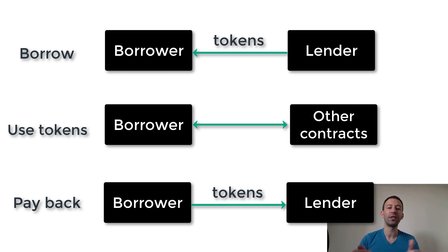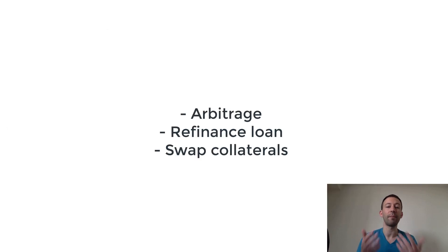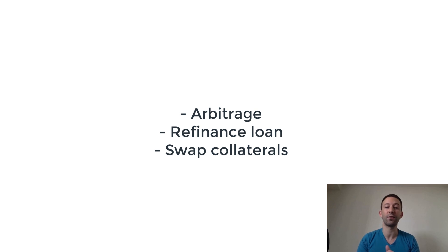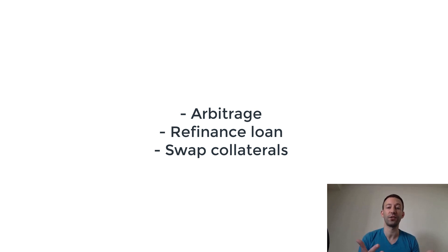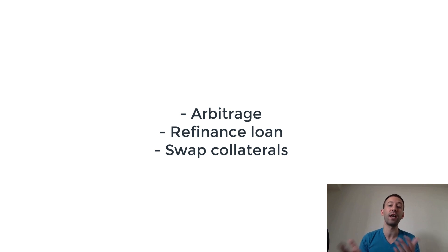So now let's see what you can do with Flash Loans. You can do arbitrage between decentralized exchanges. If you notice a discrepancy in price for a certain token, you can borrow a lot of these tokens and do your arbitrage but with a huge leverage.